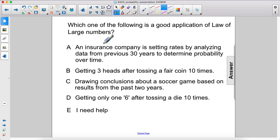An insurance company is setting rates by analyzing data from previous 30 years to determine probability over time. That seems like a lot of data, a lot of trials. I think the answer is going to be A, but let's just look through the others just to make sure.